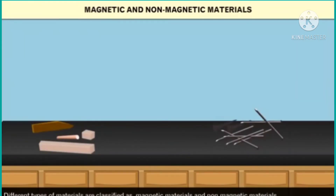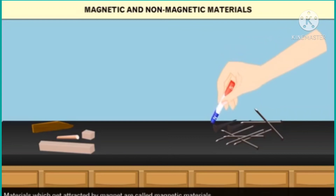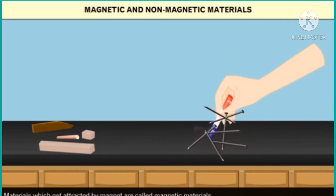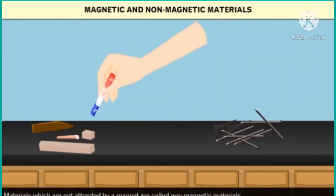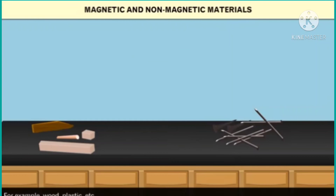Different types of materials are classified as magnetic materials and non-magnetic materials. Materials which get attracted by a magnet are called magnetic materials — for example, iron and steel. Materials which do not get attracted by a magnet are called non-magnetic materials — for example, wood and plastic.